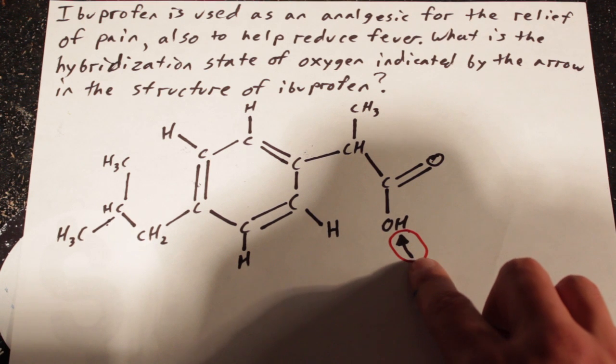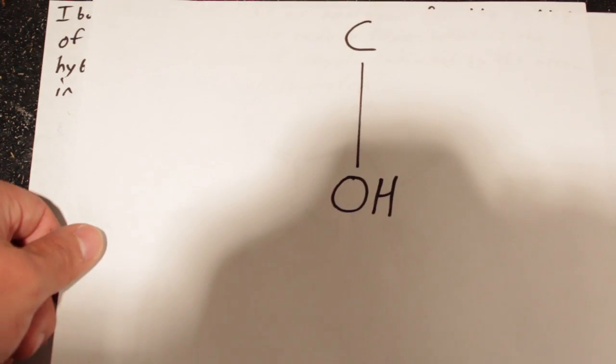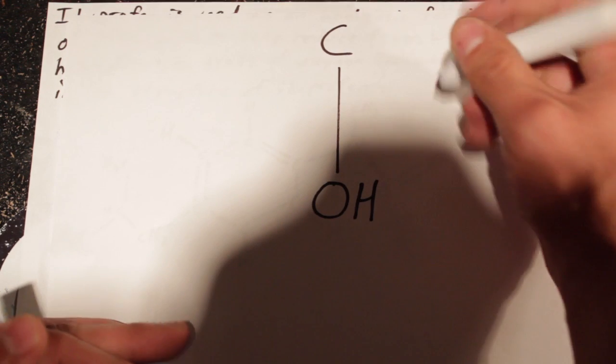I circled it in red right here. In order to find the hybridization state, this is a zoomed in version of it. We're going to have to find the steric number.